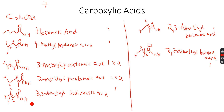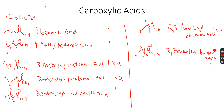Then this one has no stereoisomers because there is no chiral center and no carbon-carbon double bond. The next one has the second carbon atom as a chiral center, so it will exist as two optical isomers. The last one has no chiral centers nor a carbon-carbon double bond, so it exists as a single isomer.